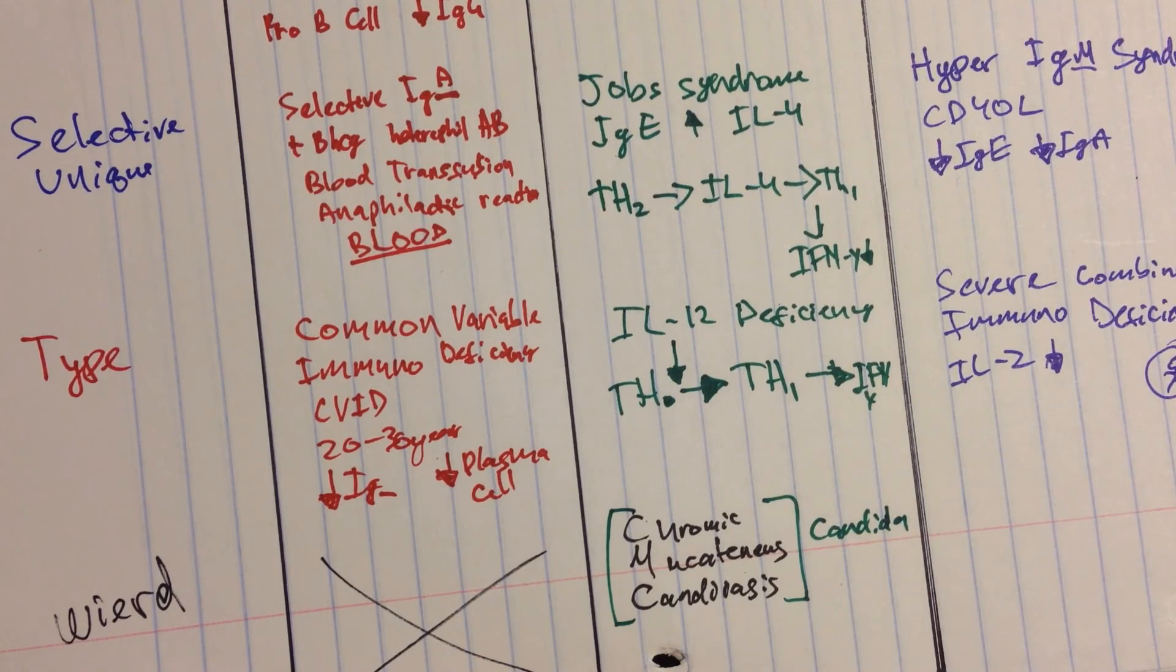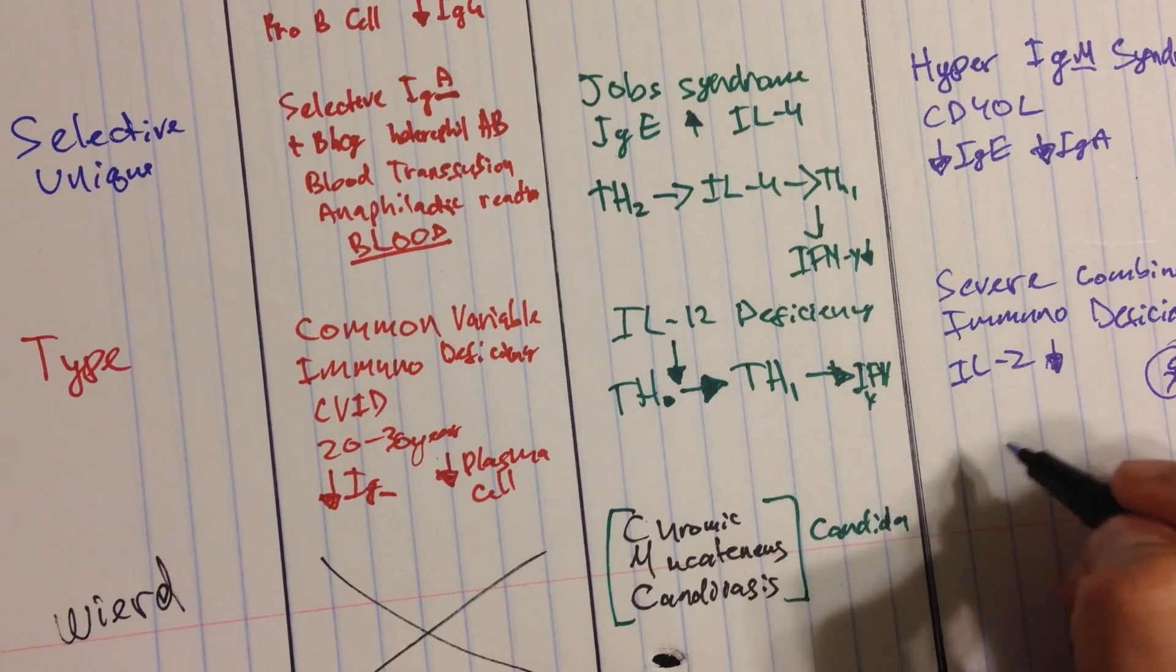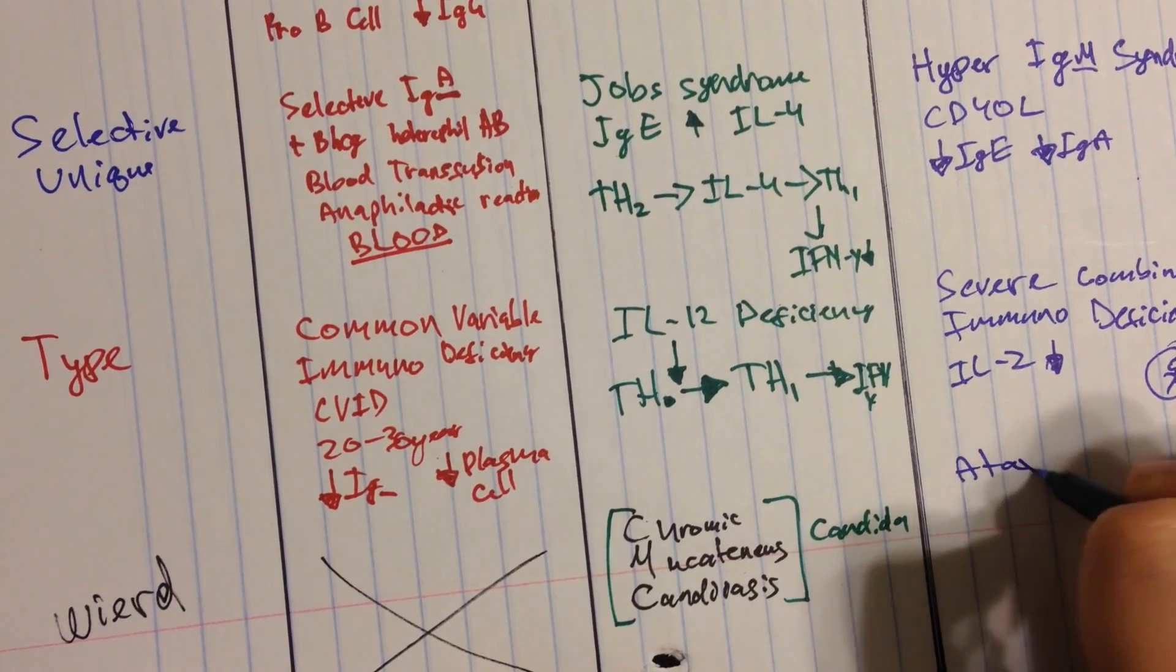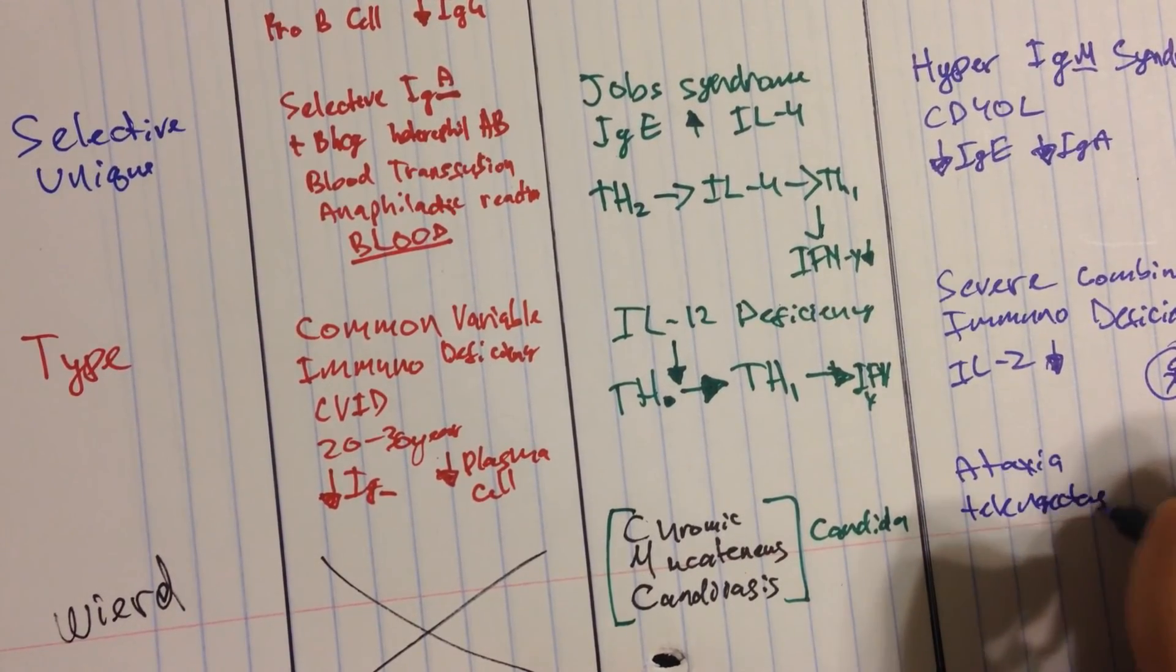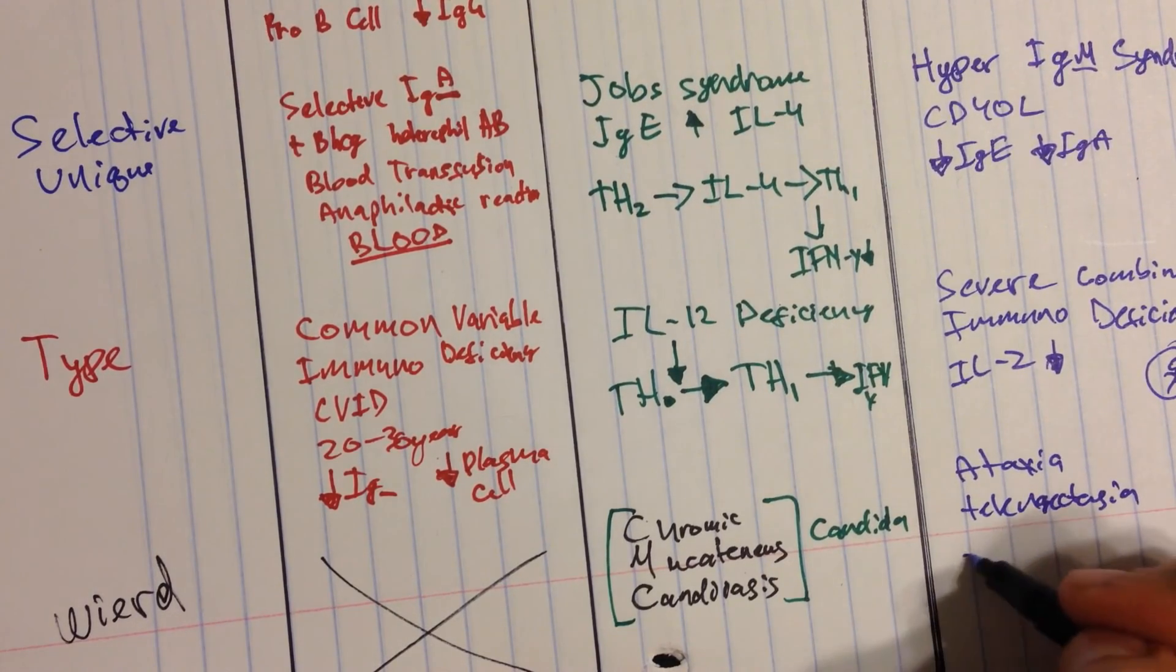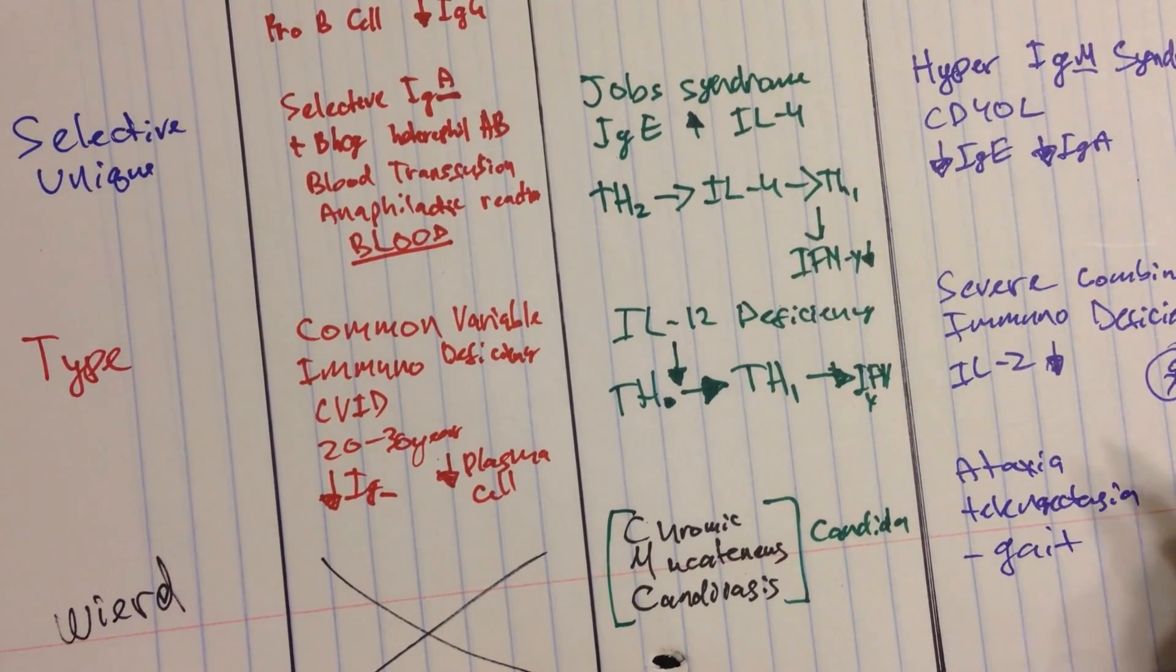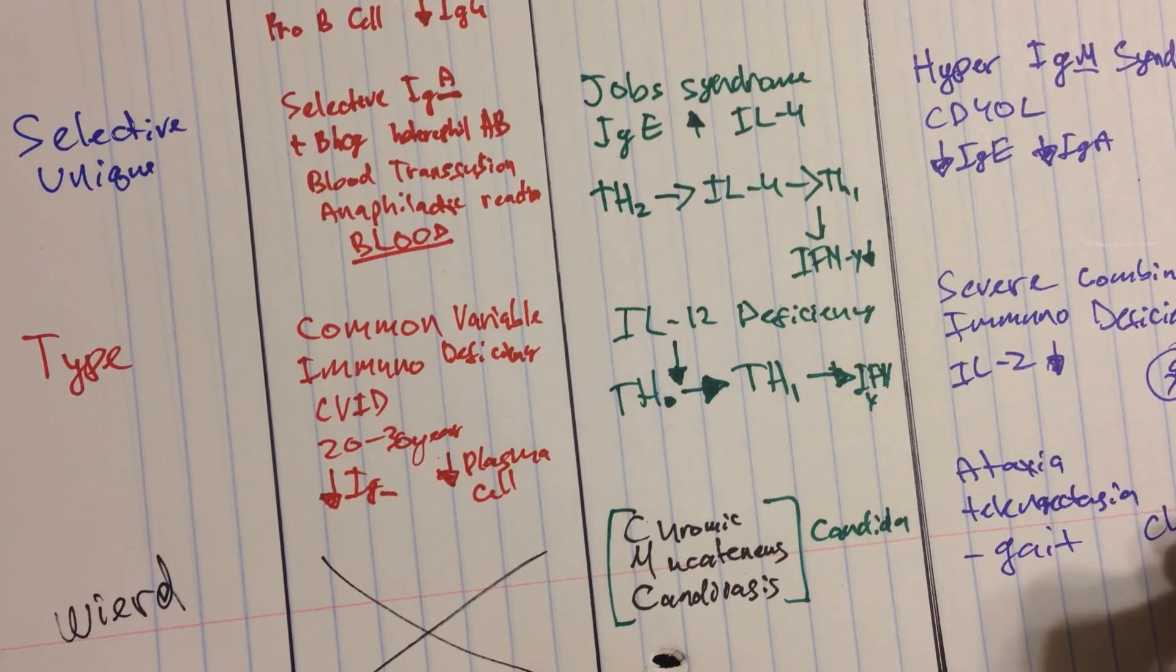Now, over here, the weird disease is Ataxia Telangiectasia. And this one, it presents with gait disturbances. I want you to think of people tripping, children falling and that type of deterioration. And then, I want you to have an IgA problem.